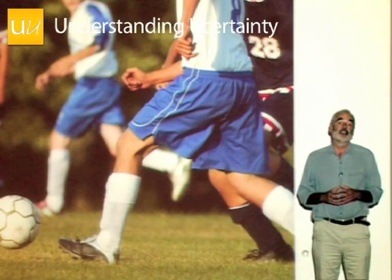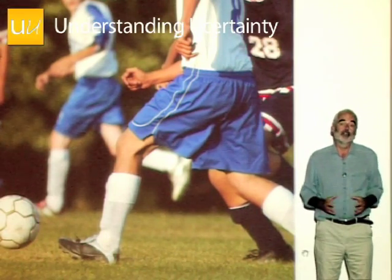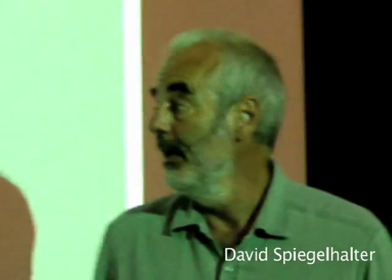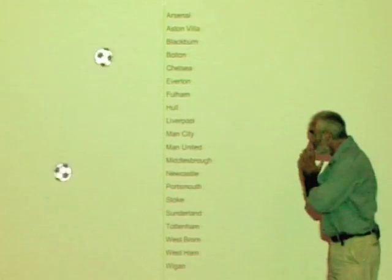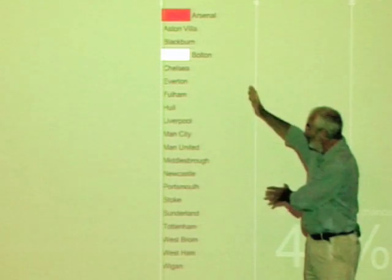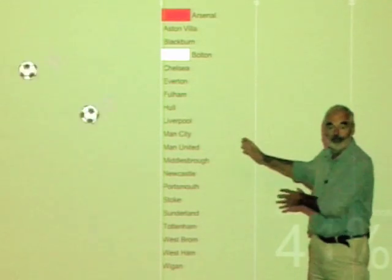This is about uncertainty in Major League football — in particular, how much of football is due to luck and how much is due to skill. We can examine that by looking at what happened last year in the English Premier League, where we can see how the league totals developed as each match was played.